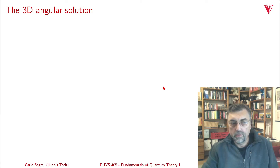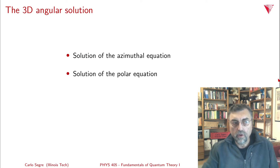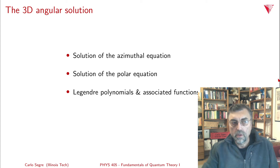In this video, we continue solving the 3D Schrödinger equation in spherical coordinates by solving the angular equations. We'll start by solving the azimuthal equation, then the polar equation, then we'll look at the Legendre polynomials and their associated functions, and finally talk about spherical harmonics.